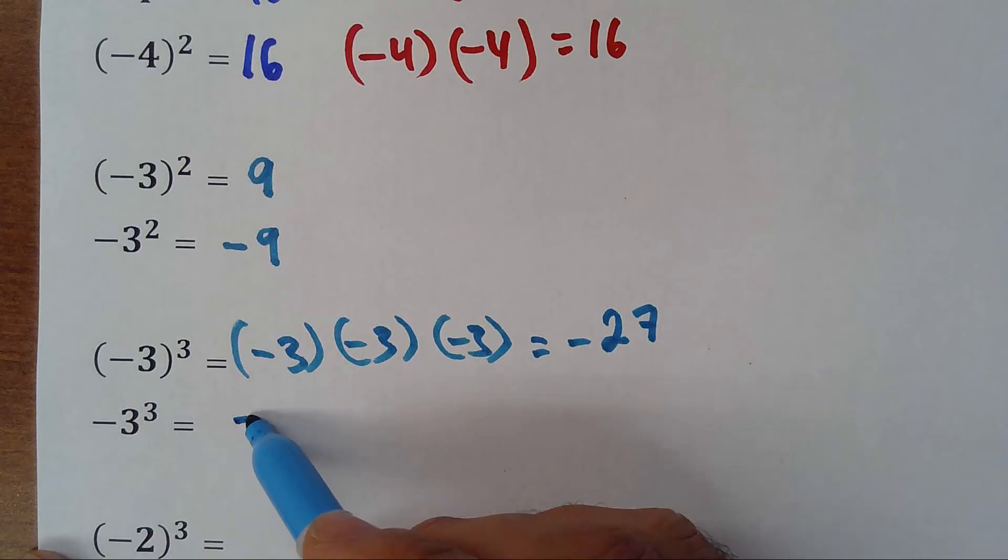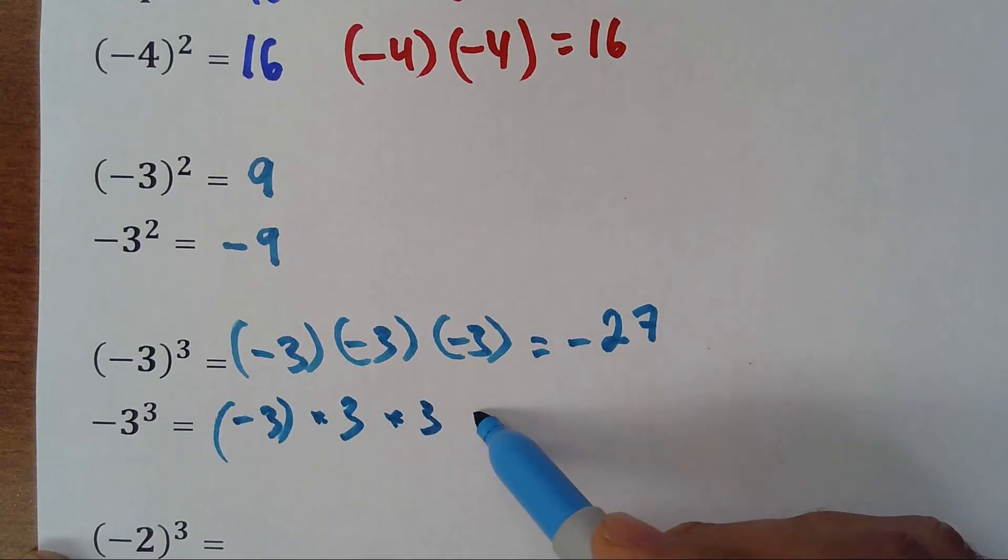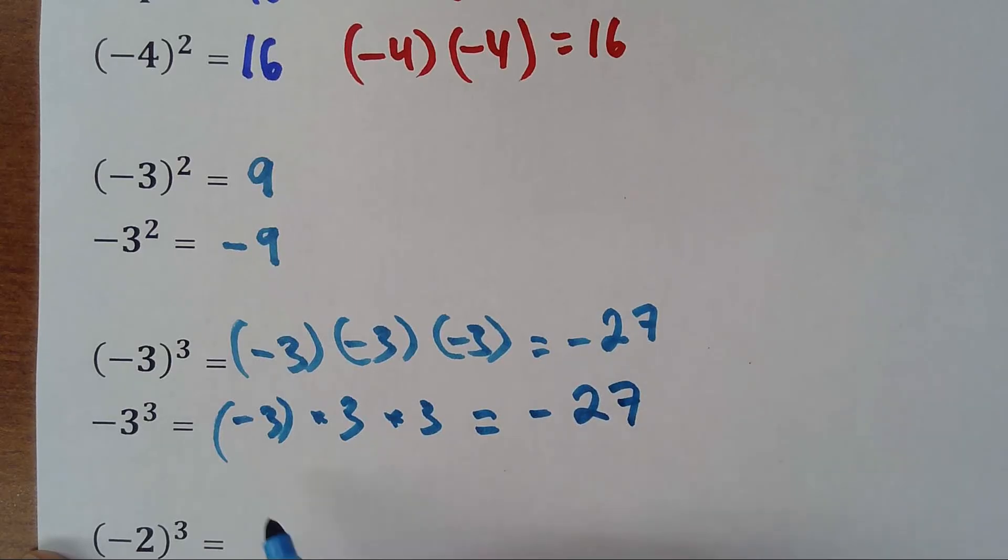And in the second case, I have minus 3 times 3 times 3. In this case, anyway, it's negative 27. Because I have minus times plus is minus, and then minus times plus is minus. So, when it's an odd exponent, a negative number, even if you have parenthesis or not, the answer will be negative as we check here.